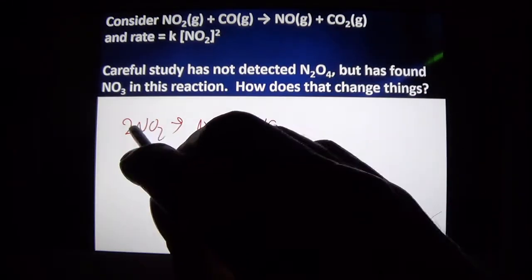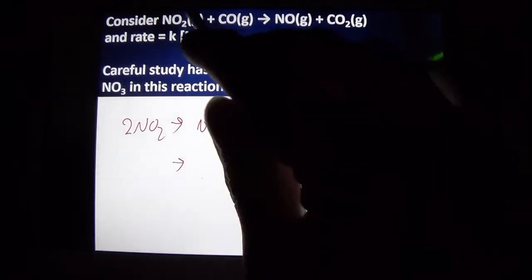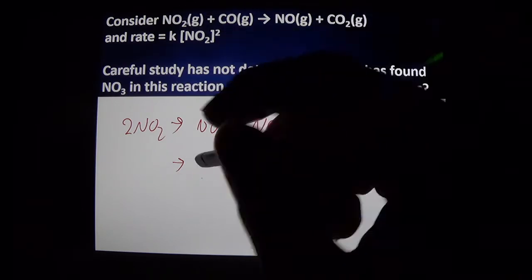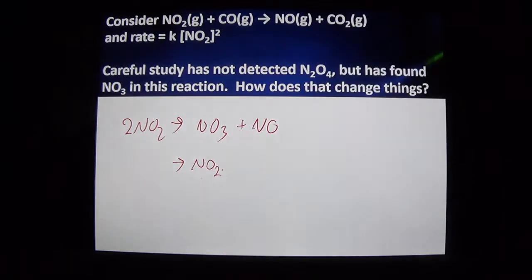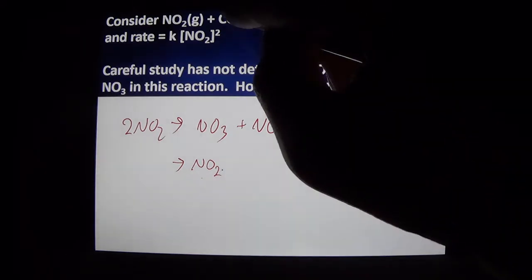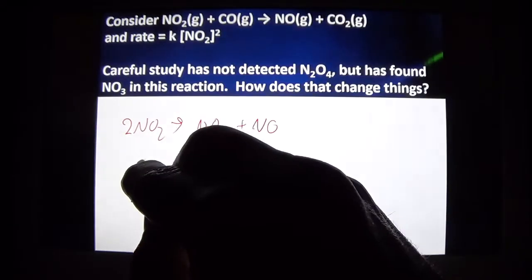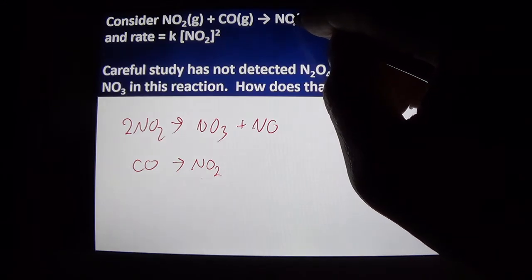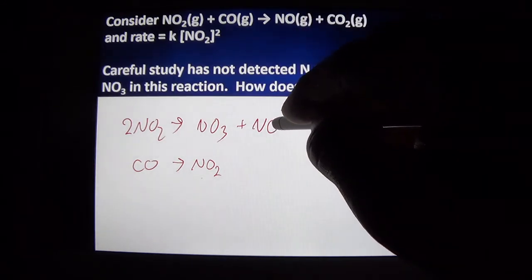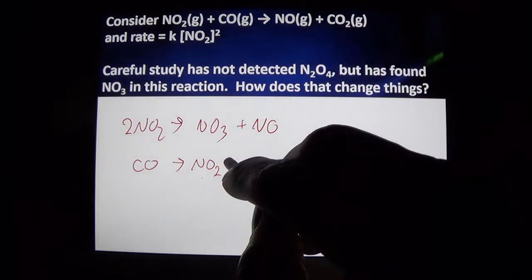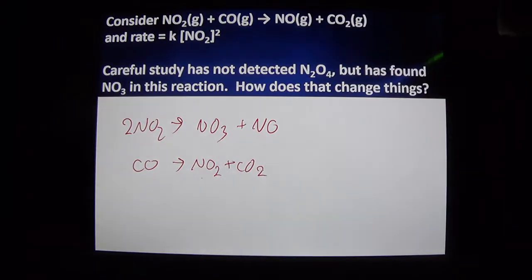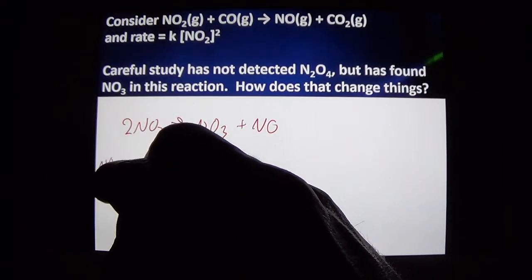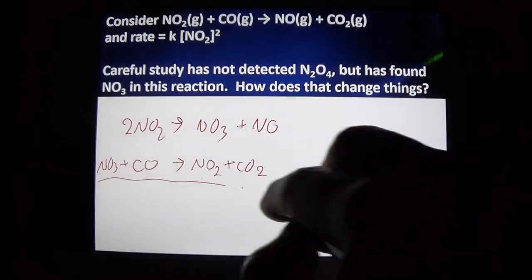Now I compare this to my overall equation. I have two NO2s, but I want only one NO2. So I'm going to need something that cancels one of those NO2s. I have CO2, but I don't have a CO yet. So I'm going to add a carbon monoxide. On the product side, I need an NO. I have an NO. On the product side, I need a CO2, and I don't have a CO2 yet. But I also have an NO3 going on, and I don't want an NO3 in my overall equation. So I need it on the reactant side there to cancel.